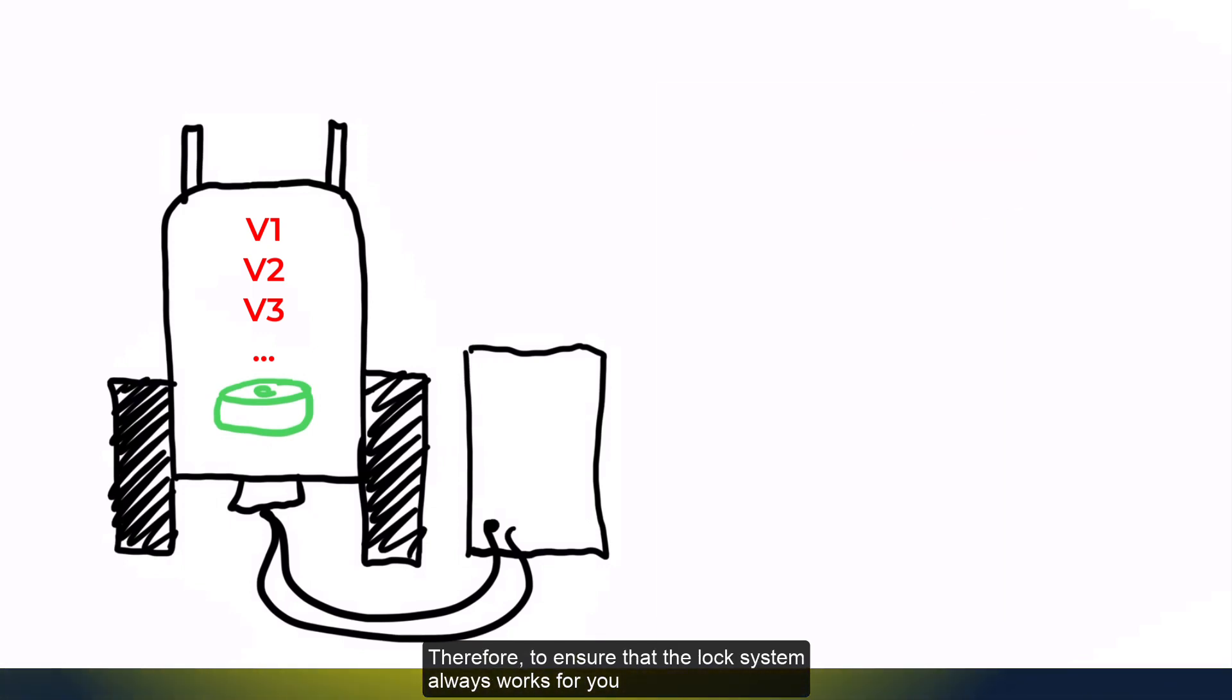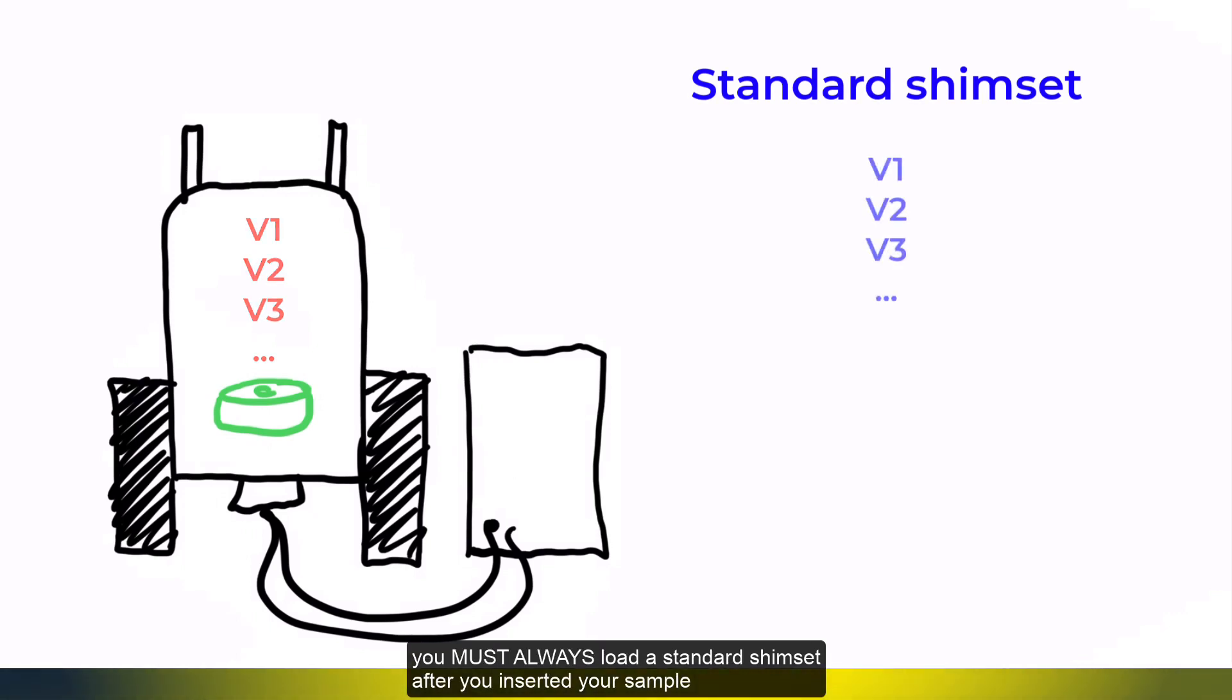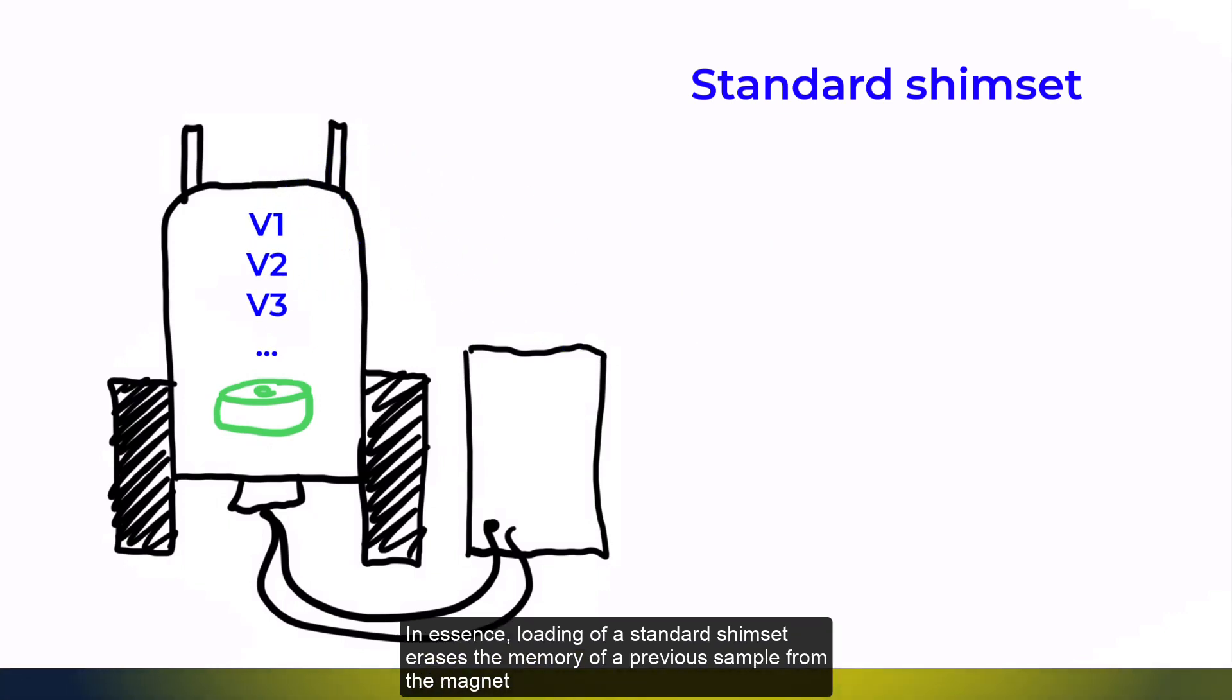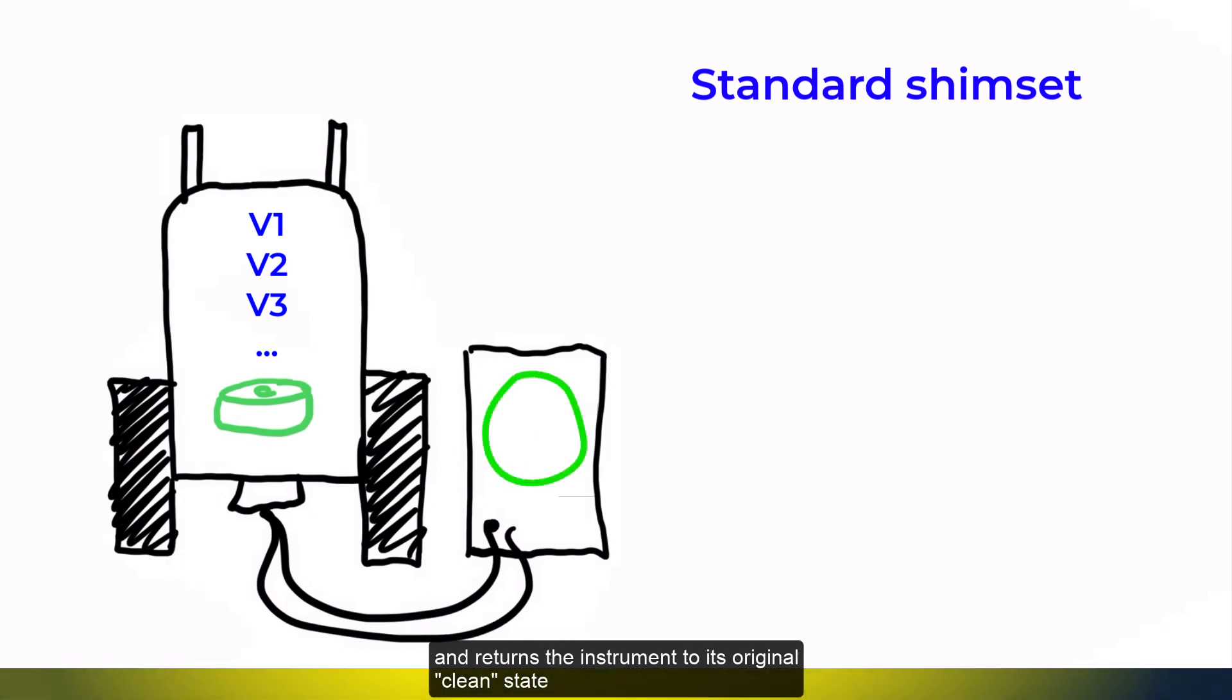Therefore, to ensure that the lock system always works for you, you must always load a standard shimset after you inserted your sample. In essence, loading a standard shimset erases the memory of a previous sample from the magnet and returns the instrument to its original clean state.